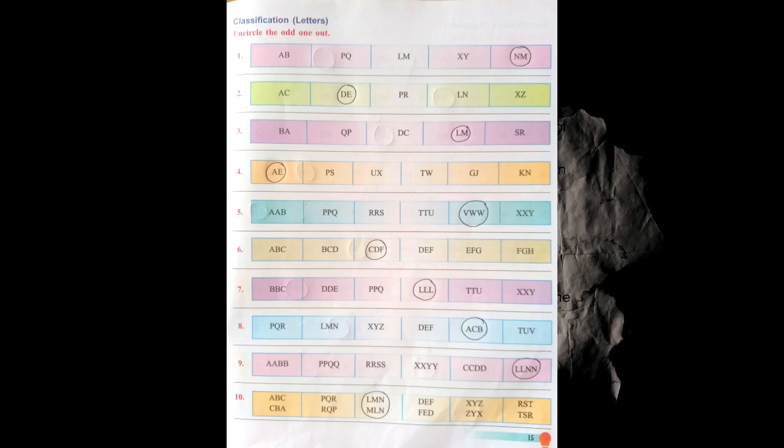Question number two: AC, PR, LN, XZ and DE. DE will be the odd one because all the other pairs have one letter skipped between them — A then C skipping B, P then R skipping Q, L then N skipping M, X then Z skipping Y. But D and E are consecutive with nothing skipped, so DE is the odd one.